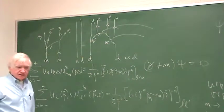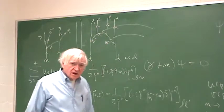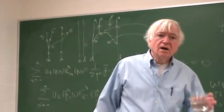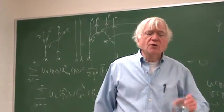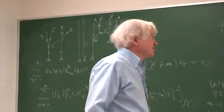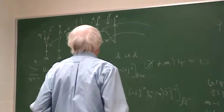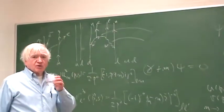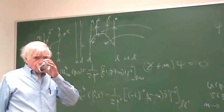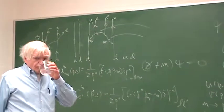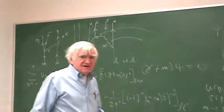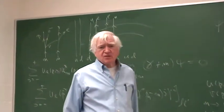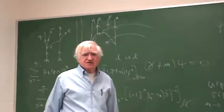Are the W bosons Dirac particles or Majorana? Oh no, no — the W bosons are bosons. So they're not Dirac at all. They're spin-1 objects, and they have masses around 81 GeV or so.